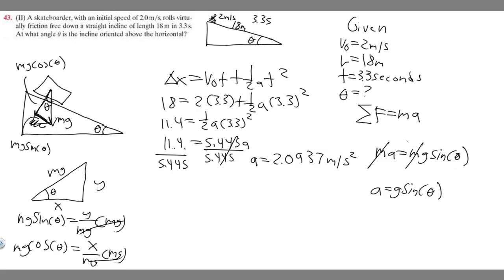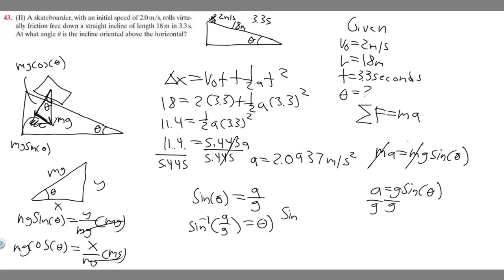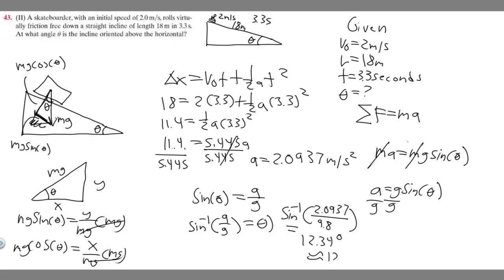Dividing both sides by g, we get sine of theta equals a over g. Then to solve for theta, take the arc sine: theta equals arc sine of a over g. We know a is 2.0937 and g is 9.8. So we take the arc sine of 2.0937 divided by 9.8, and you get theta equals 12.34 degrees — so about 12 degrees.